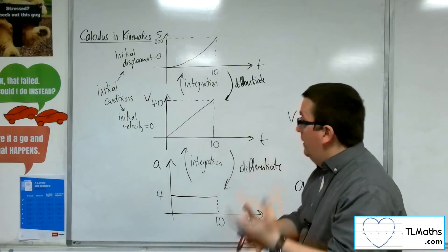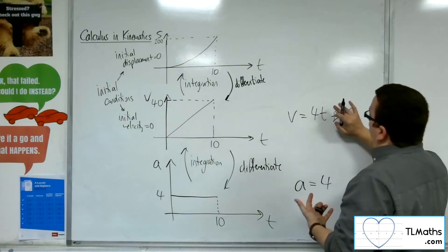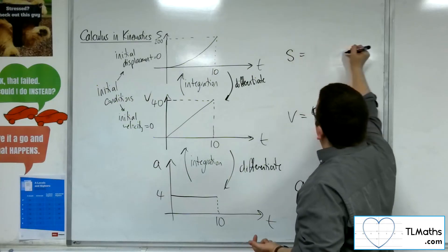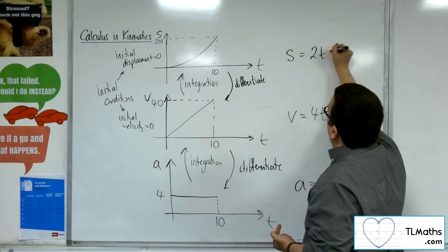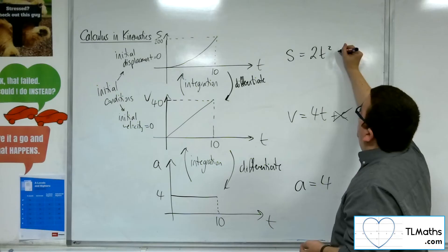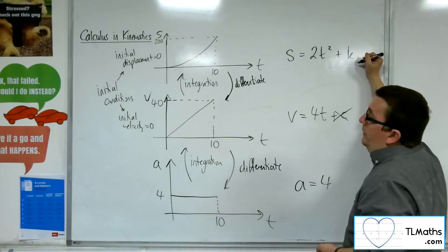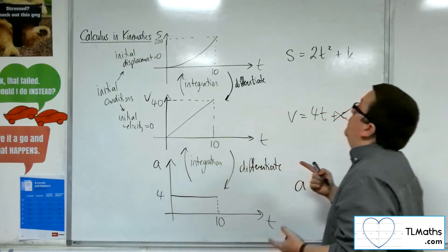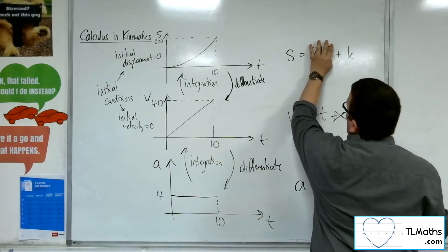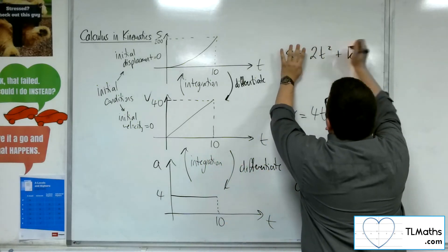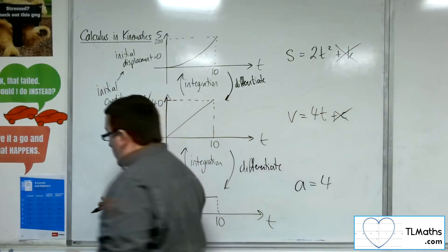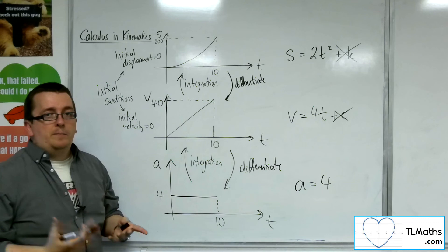Depending on the initial conditions, that will change. Once I've got that, I can then integrate up to the displacement, which will be 2t squared plus another constant. And if I'm told that the initial displacement is 0, then when t is 0, s is 0, and so k must be 0. So it's all starting to come together.